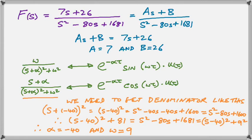Now what we need to do is massage the denominator of our original equation to get it to look like the one in the denominator on the left-hand side. And as you can see in the orange writing, this is not too hard to do. If you follow it, you will see that we end up with an alpha of minus 40 and an omega of 9.